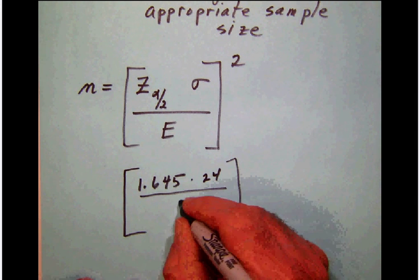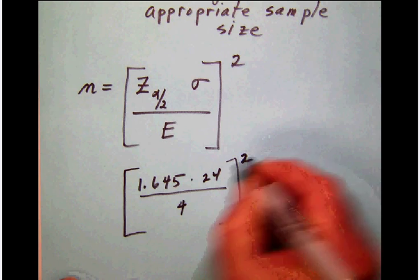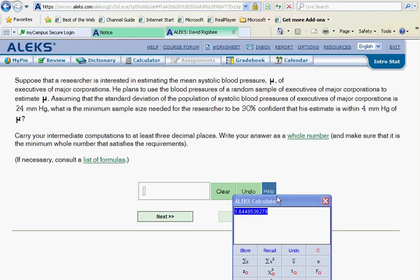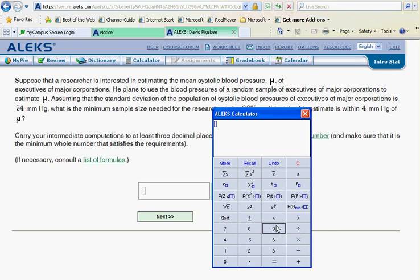Don't forget that we need to square this. And what we're going to need to do now is simply run this through our calculator. So grab your Alex calculator and we're going to be ready to crank. Let's get that calculator up here and clear it. A big set of parentheses. We're going to have 1.645, we're going to multiply by our standard deviation of 24, we're going to divide that by our error of four. Close those parentheses and square it.